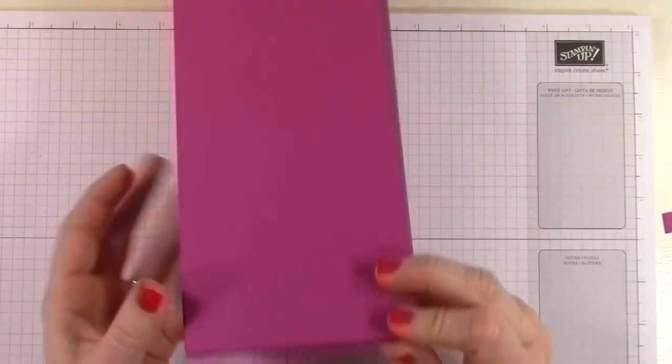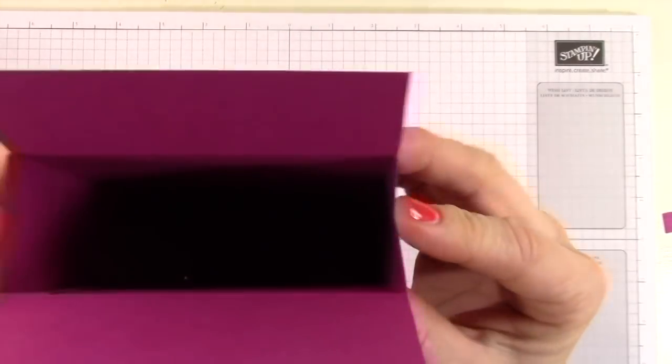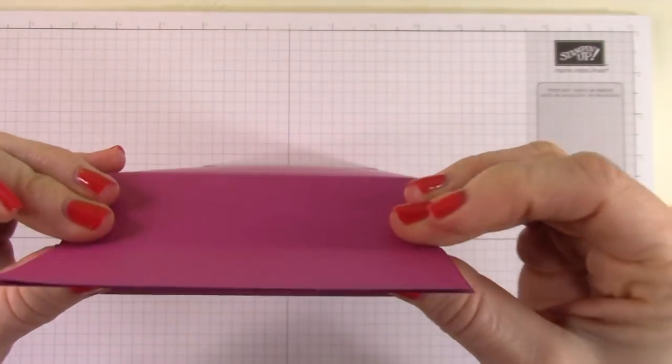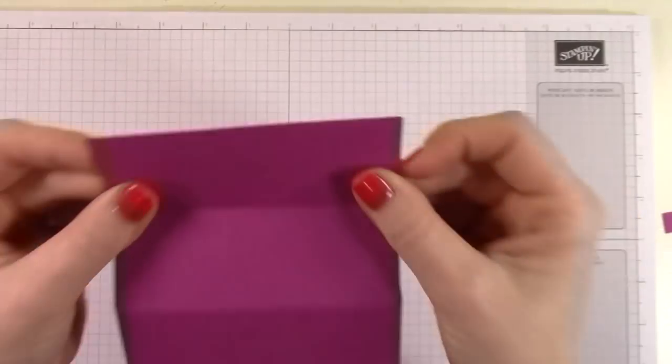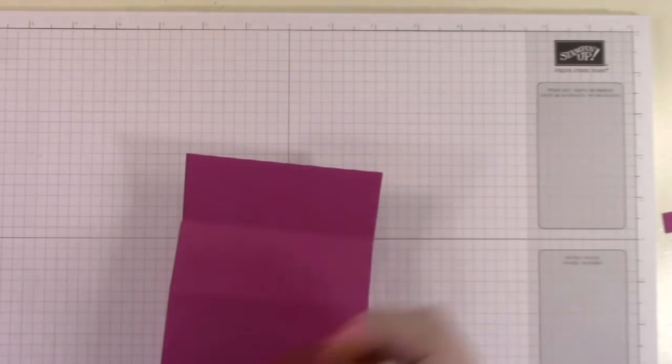And again, you want to use tear and tape adhesive or another strong adhesive. Now we're just going to push in on the corners and pinch. And that closes the top of our box. Isn't that a cool closure?